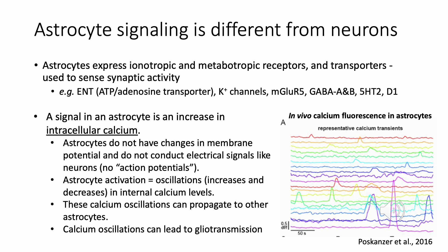However, unlike neurons, a signal in an astrocyte does not result in membrane potential changes. Astrocytes don't conduct electrical signals and don't have action potentials. Instead, astrocyte activation results in increases and decreases in intracellular calcium levels called calcium oscillations.